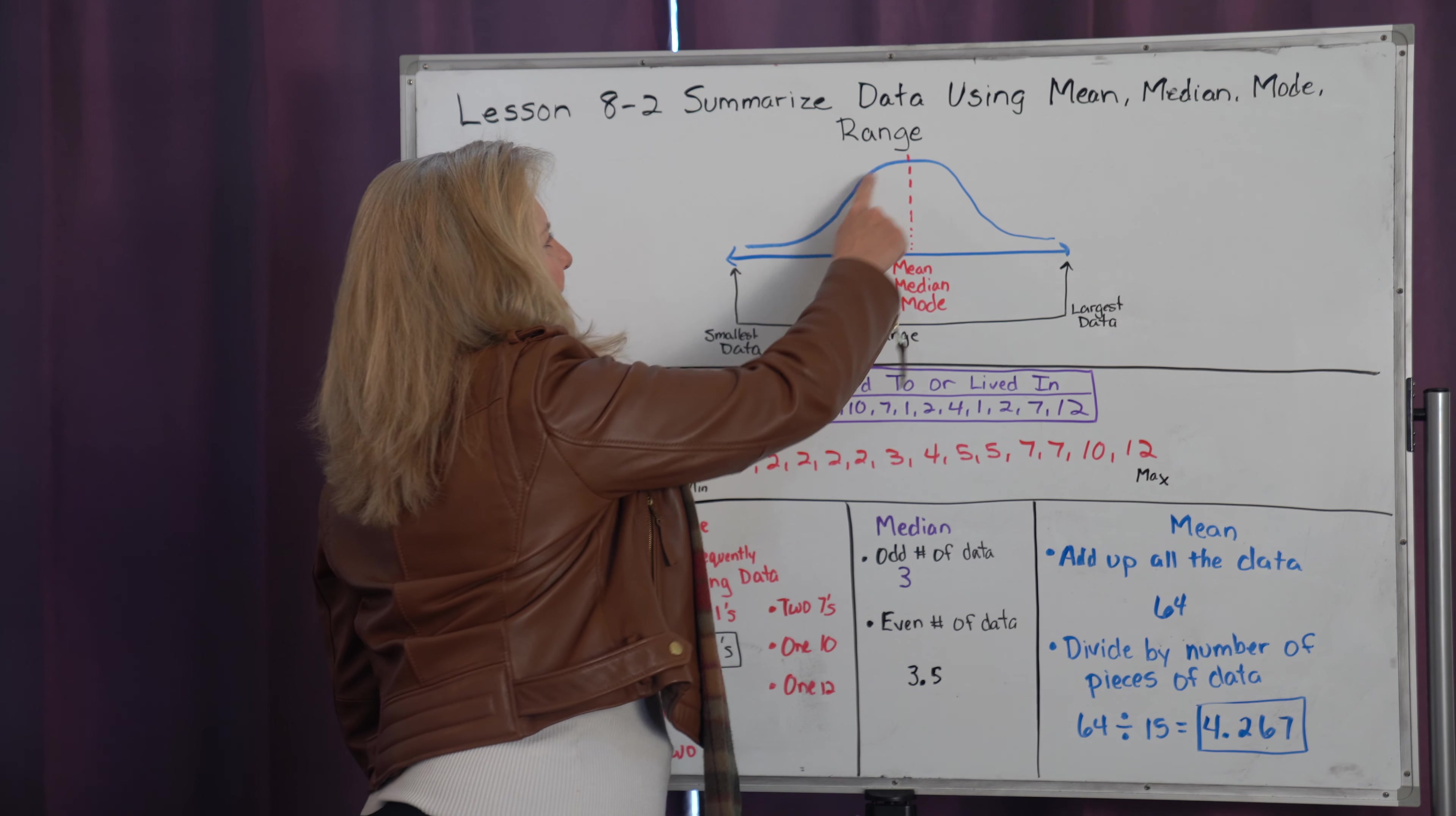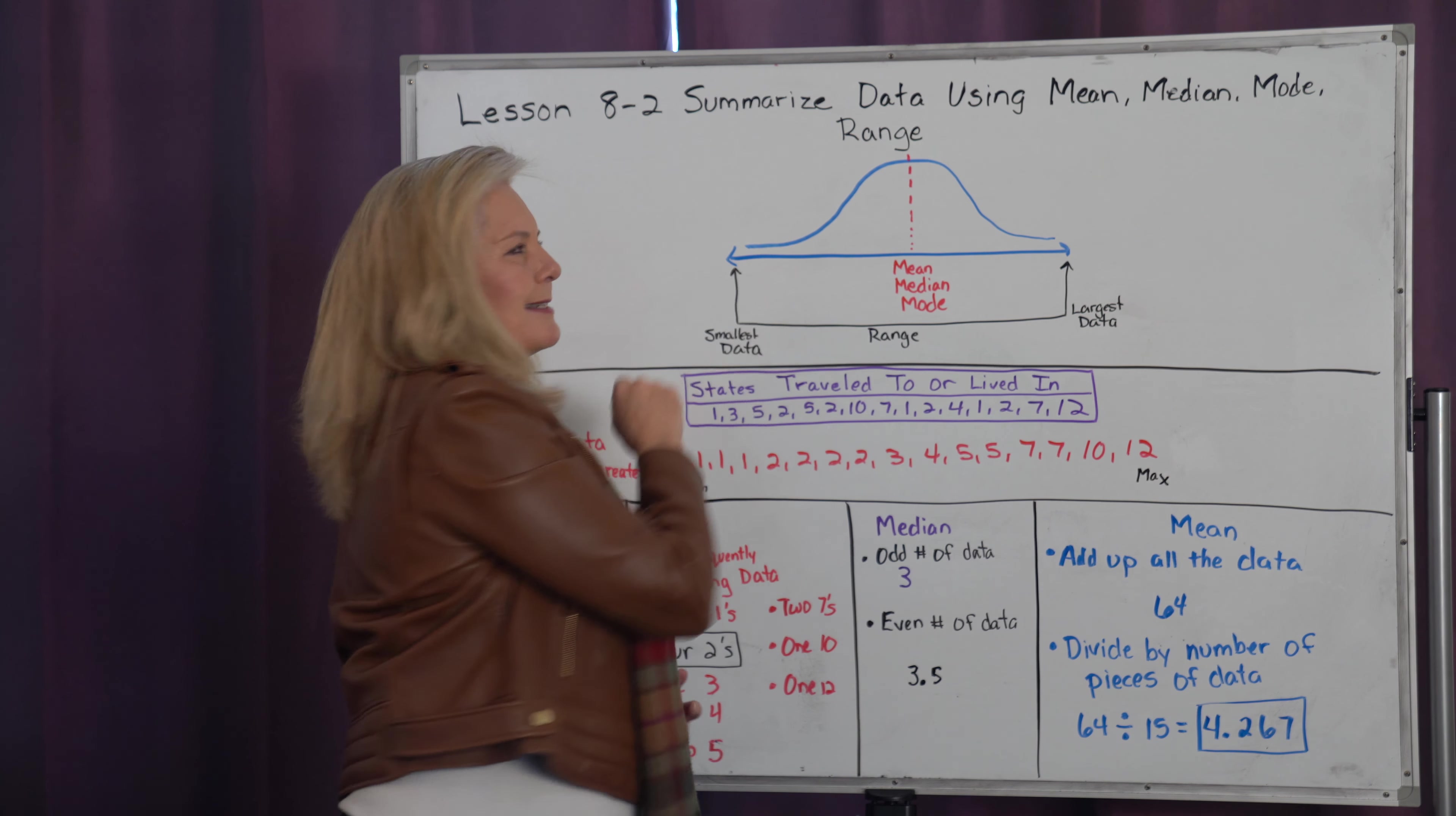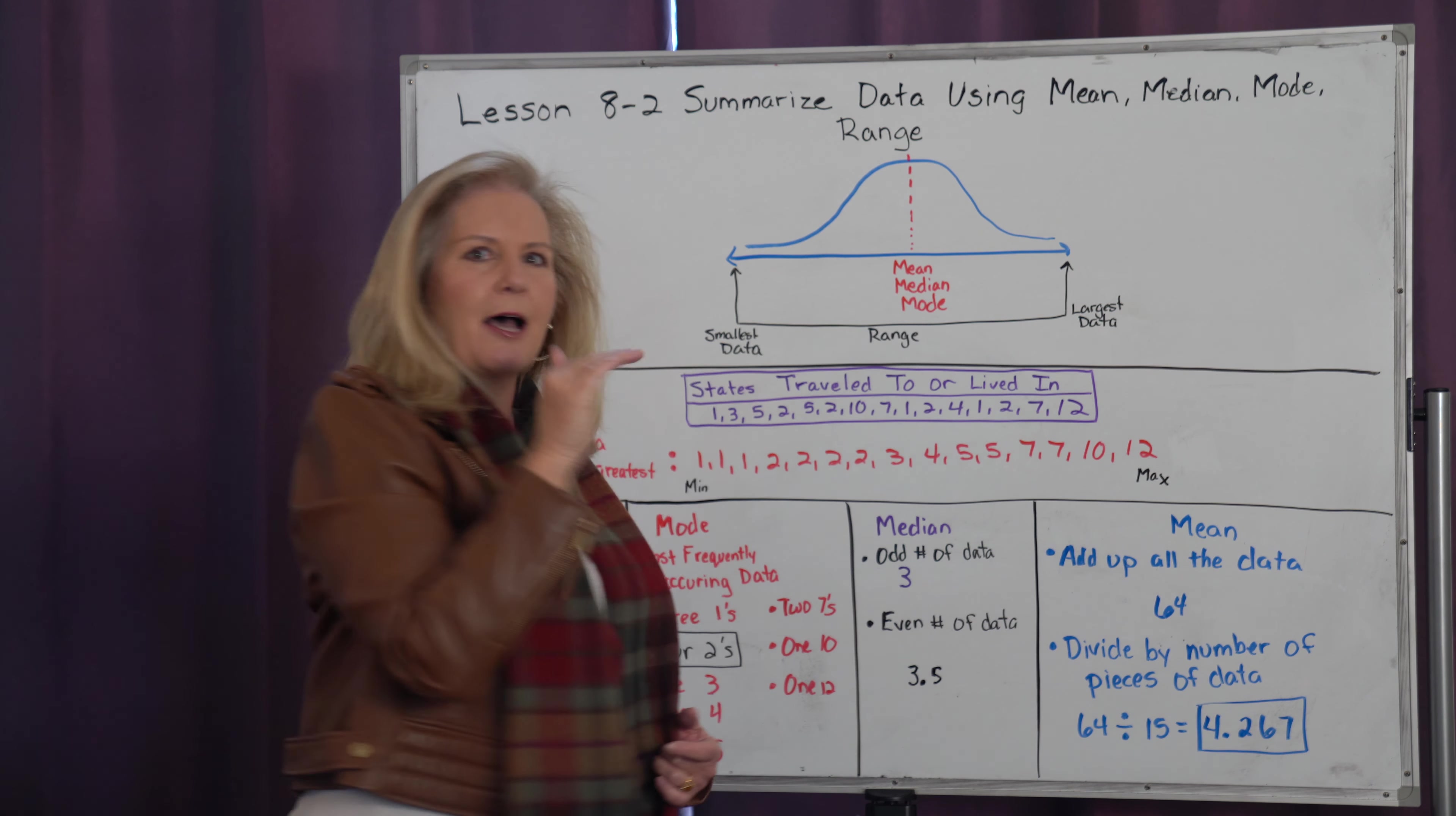When we look at a data set, we can see that our data is spread across from smallest to largest, and usually data bunches kind of in the center. I'll have a few pieces of data that are really small, a few pieces that are really big, but for the most part most of my data will fall right here at the top of this hill.